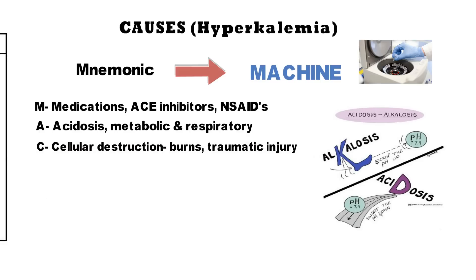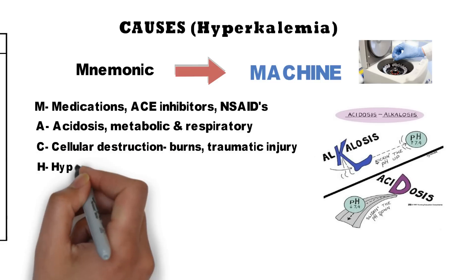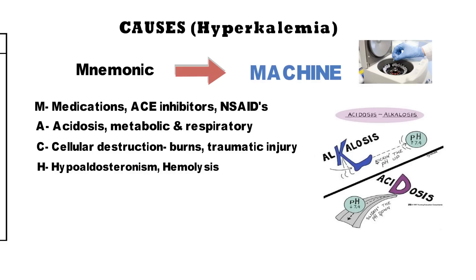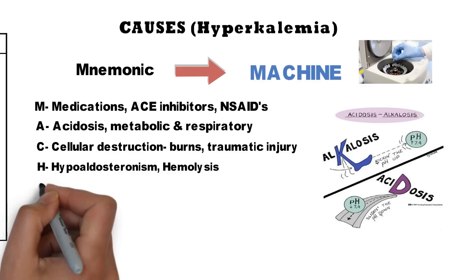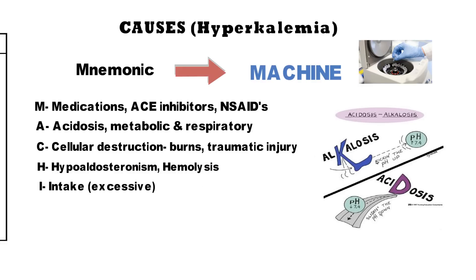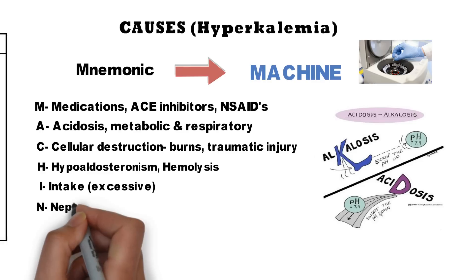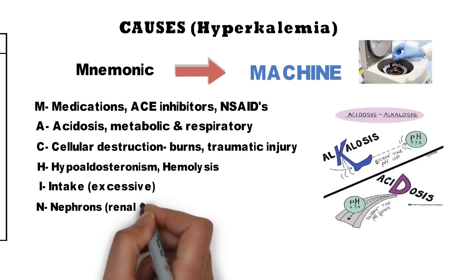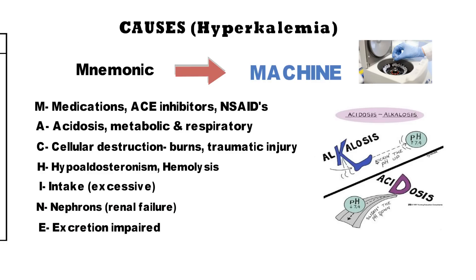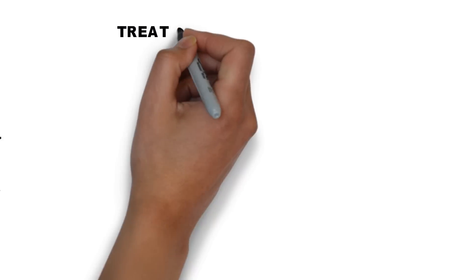Continuing with MACHINE: C stands for cellular destruction — due to burns or traumatic injury. H for hypoaldosteronism or hemolysis. I for excessive intake of potassium. N for nephrons — that is, in renal failure. E for excretion is impaired.